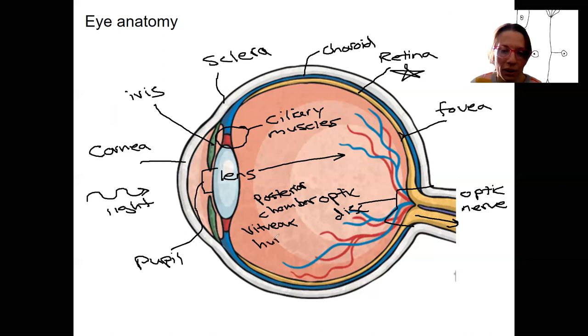Which is full of vitreous humor. That humor. That humor is a liquid. The anterior chamber is in front of the lens. It's anterior to the posterior chamber.